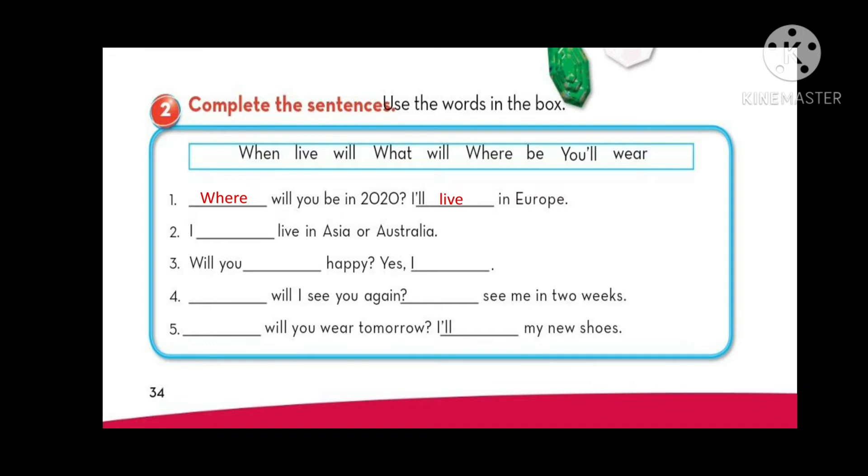Number two. I live in Asia or Australia. So this is the will or won't form. Do we have won't here? No. So we should use will. I will live in Asia or Australia. Number three. Will you happy? Will you be happy? That's right. We need a base verb. Will you be happy? Yes, I will. That's right. We said with yes comes will, with no comes won't.